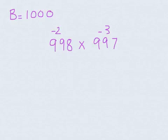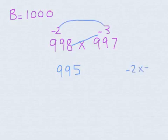First step, over, cross and add. The second step, this gives us 995. 998 minus 3 gives us 995. Third step, multiply. Minus 2 times minus 3 gives us 6.